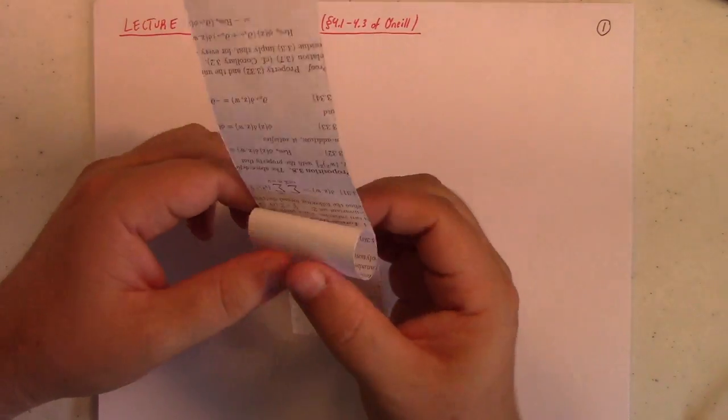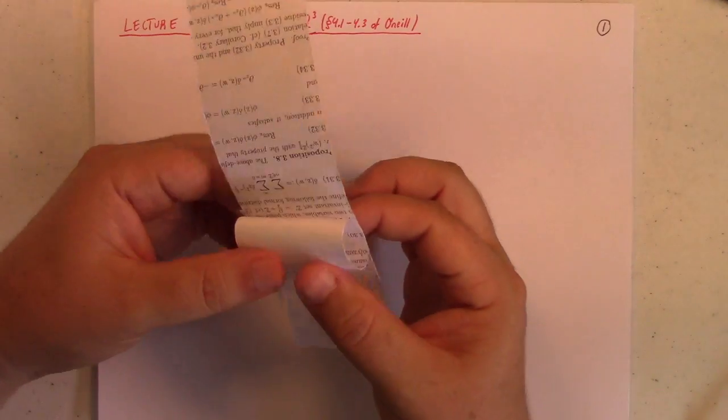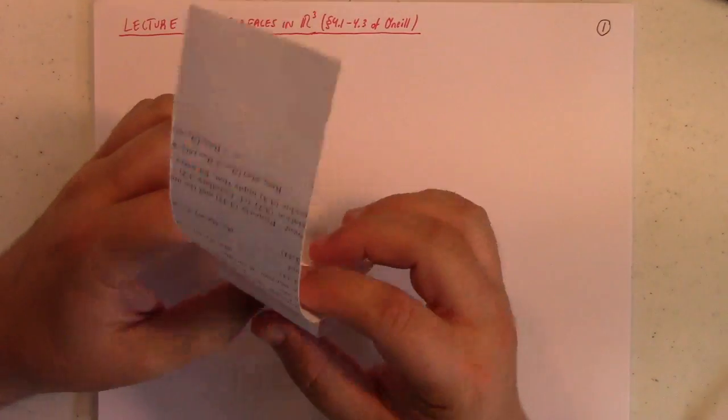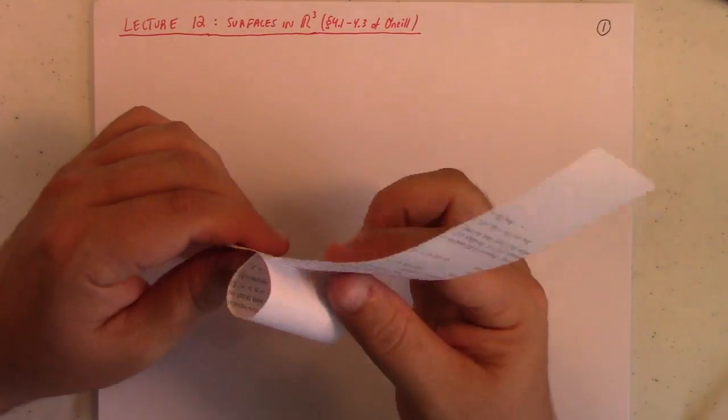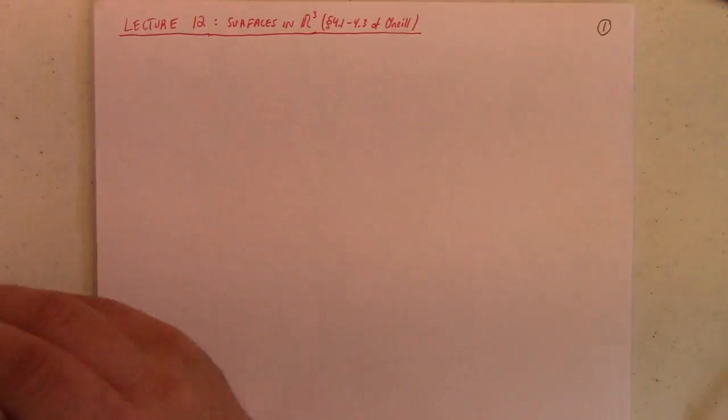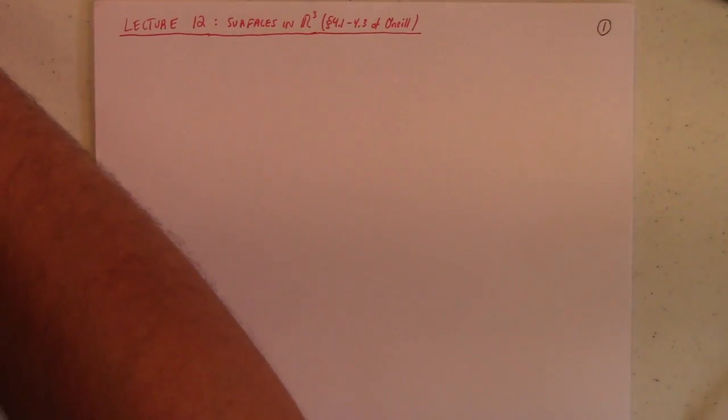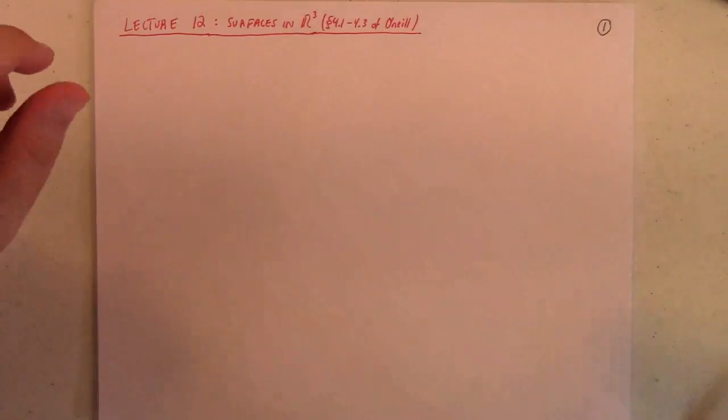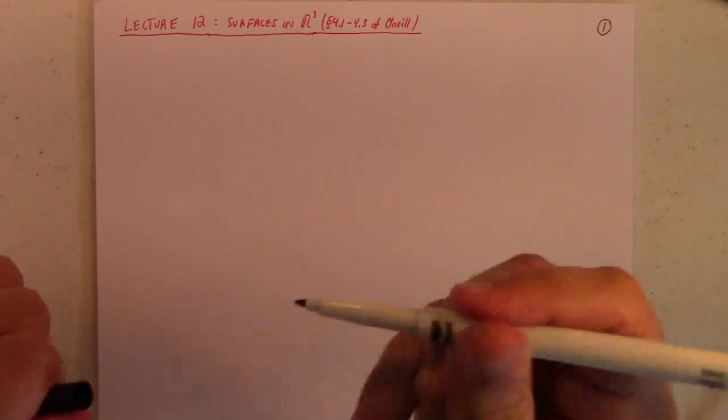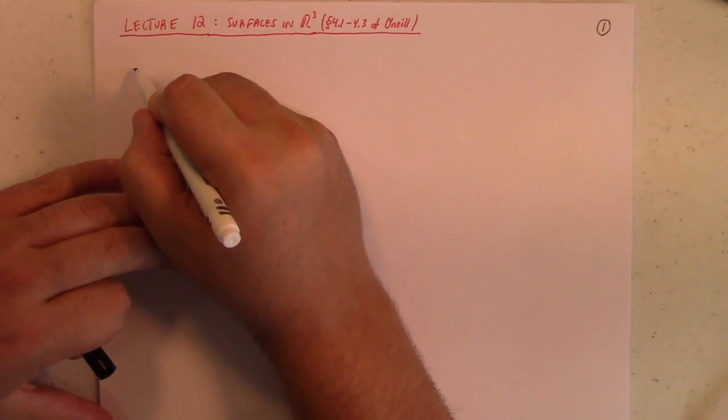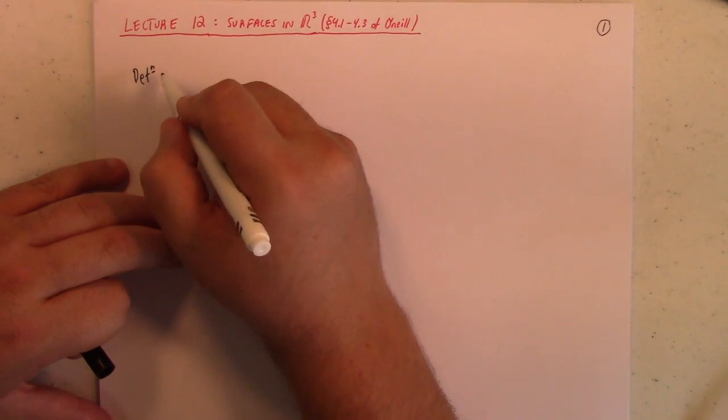So we need a definition to try to avoid that. And what is it, what do you mean when you say something is a surface, or more precisely, a regular smooth surface in R3? Well, it all goes back to the definition of, for us, a so-called coordinate patch.